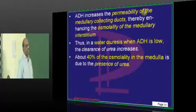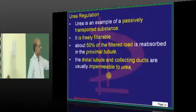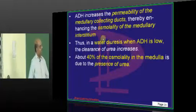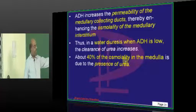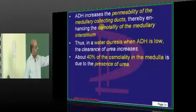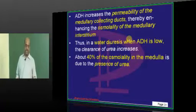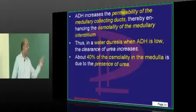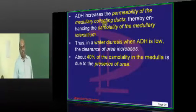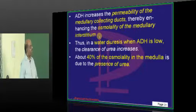If you look at ADH, what is the effect of it on the collecting duct? Typically, the distal tubule and collecting ducts are impermeable, but the medullary collecting duct is not completely strict. If ADH is not there, it does not reabsorb urea. But if ADH is present, there is permeability for urea in the medullary collecting duct, and that will increase the osmolarity of the medullary interstitium.